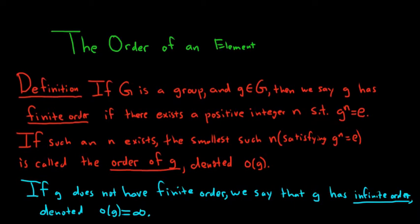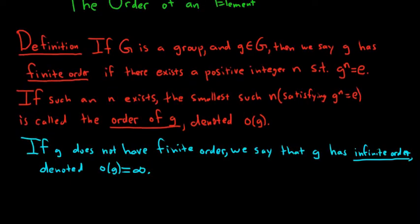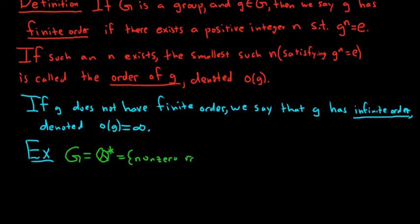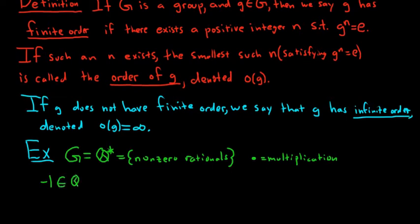So that's the definition of the order of an element. Let's look at some examples. Let G be the set of non-zero rational numbers, Q*, under regular multiplication. The element negative one is in this group and has finite order, because negative one to the 102 equals one, and one is the identity element.